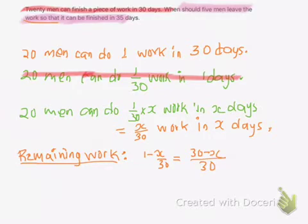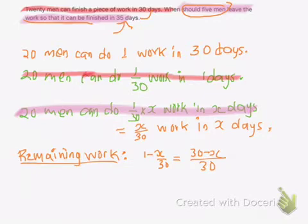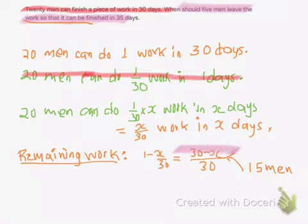So the remaining work, the work that is done by 20 men in x days, should be finished in 35 days. Here 30 days has been increased to 35 days because the number of men has been decreased by 5. So at first there were 20 men but later they became 15 men. So this remaining work is for 15 men and the total work should be finished in 35 days.